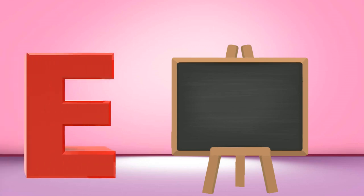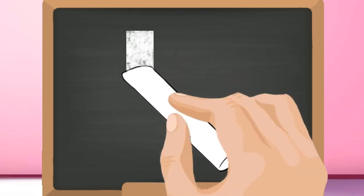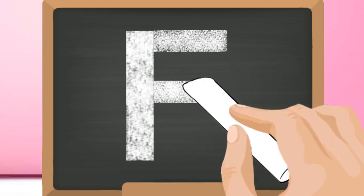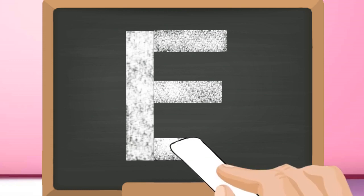E, capital E. Start from the top and draw a standing line down. Go again to the top and draw a slanting line to the right. Then go to the middle and draw another line. Lastly, go to the bottom and draw one more line in the same way.